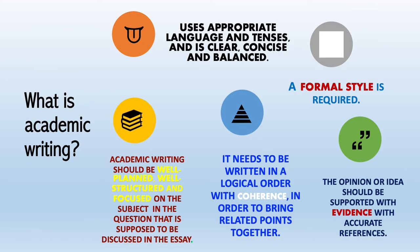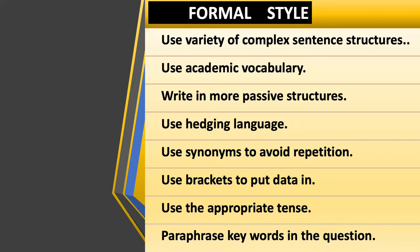Now let's see what academic writing is. Academic writing is a clear, concise, focused, and structured piece of writing backed up by evidence using formal tone and style. Formal language is characterized by the use of standard English, more complex sentence structures, infrequent use of personal pronouns, and lack of colloquial or slang terms.